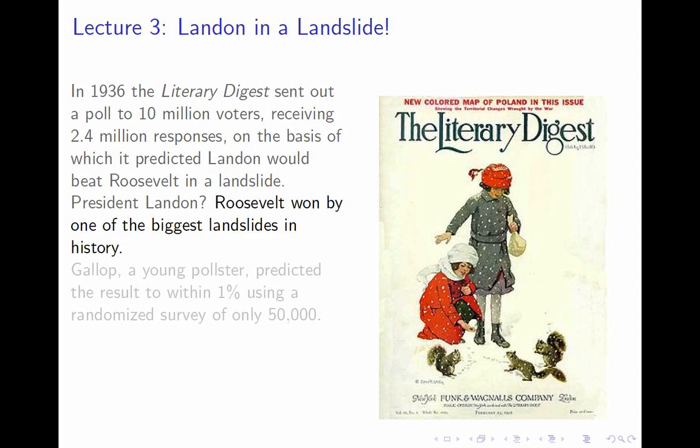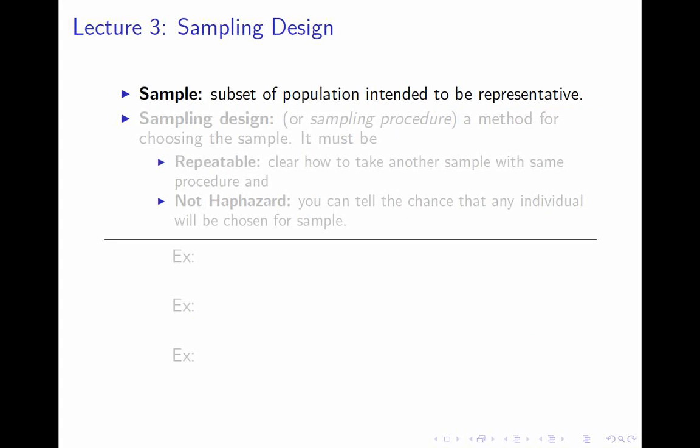At the same time, a young pollster by the name of Gallup predicted the result to within 1% of the final vote tally, and he used a comparatively tiny poll of only 50,000, although that's vastly more than polls that are used today. So our lecture on sampling design is addressing, in part, what they did wrong and what he did right, and in general, how to design your samples.